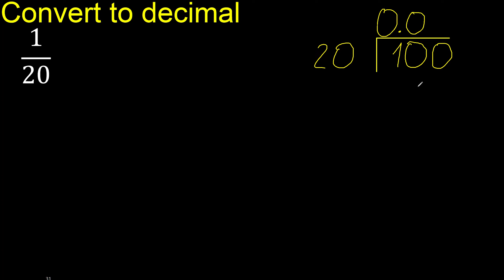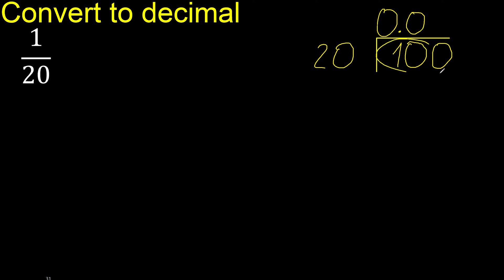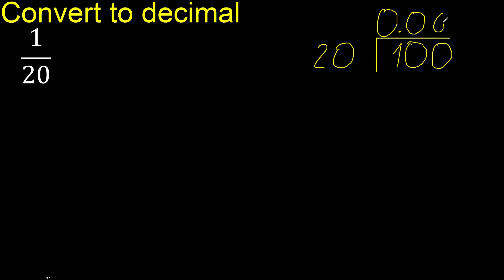0. 100 is not less than 20, therefore with 100: 20 multiplied by 6 is 120 — excessive. 20 multiplied by 5 is 100 — ok.